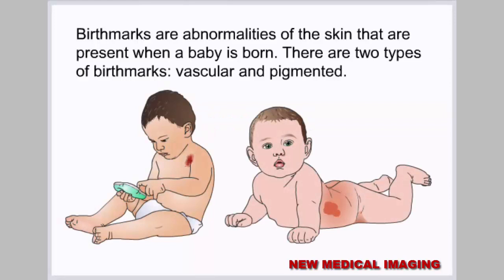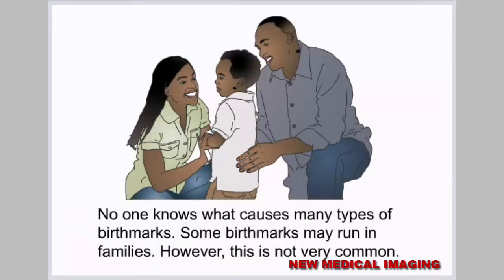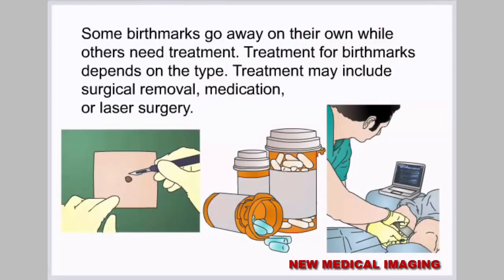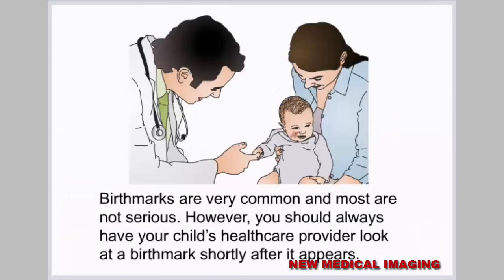Birthmarks are abnormalities of the skin present when a baby is born. There are two types: vascular and pigmented. No one knows what causes many types of birthmarks; some may run in families, but this is not very common. Some birthmarks go away on their own while others need treatment; treatment depends on the type and may include surgical removal, medication, or laser surgery. Birthmarks are very common and most are not serious, however you should always have your child's healthcare provider examine a birthmark shortly after it appears.